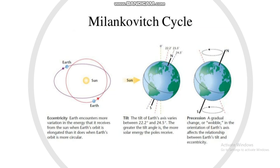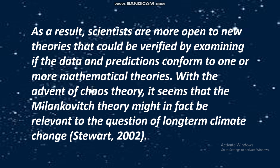Precession is a gradual change or wobble in the orientation of Earth's axis that affects the relationship between Earth's tilt and eccentricity. As a result, scientists are more open to new theories that can be verified by examining whether data and predictions conform to mathematical models. With the advent of chaos theory, the Milankovitch theory may in fact be relevant to the question of long-term climate change.